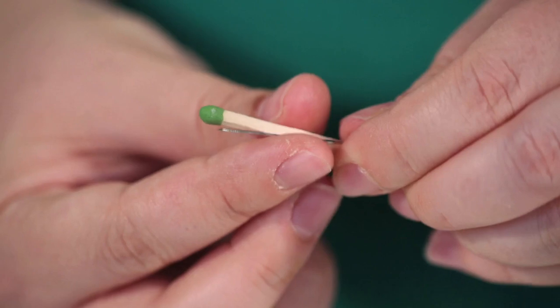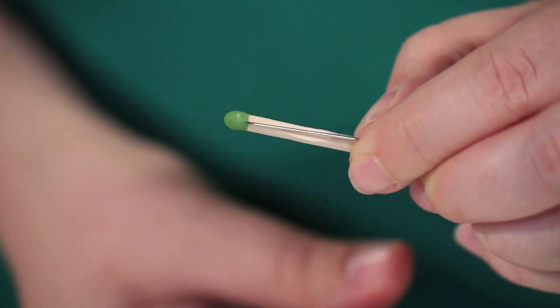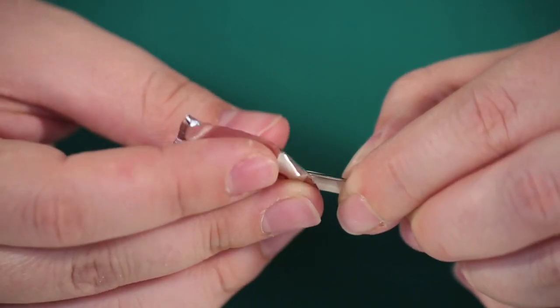Then, you have to make the rocket. Take a match, and you hold a pin next to it. This creates a little channel because the next step is wrapping it up with aluminum foil.